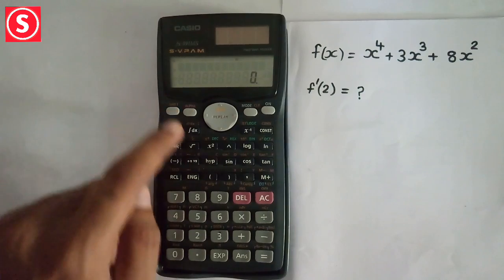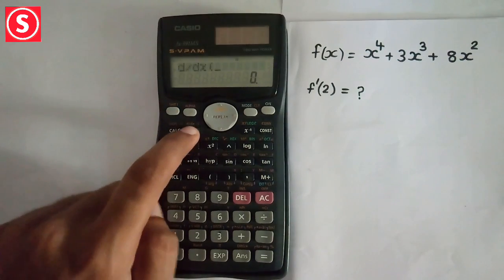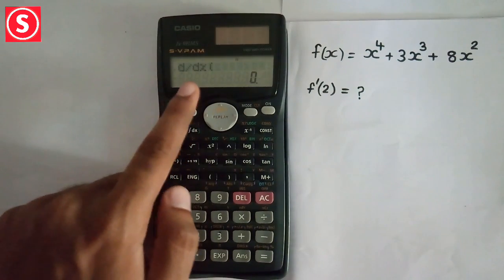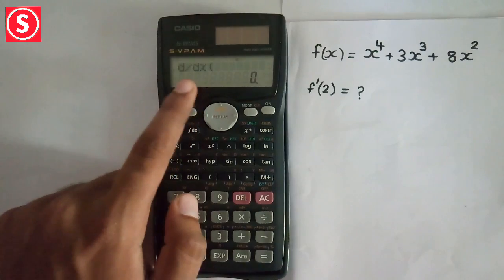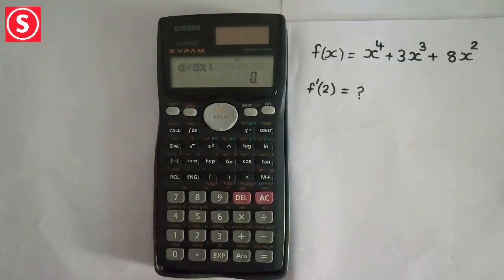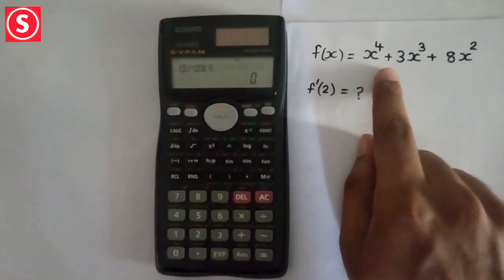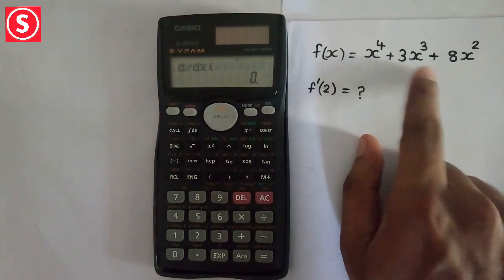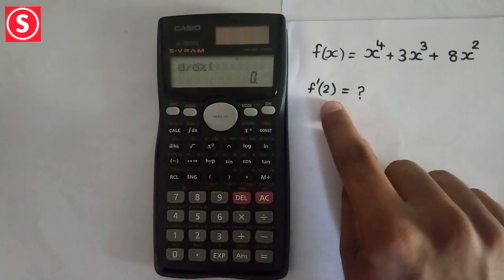Click shift and then on integral dx button. The differentiation sign comes on the screen: d/dx of the function. We are going to do the function x^4 + 3x^3 + 8x^2 at x = 2.